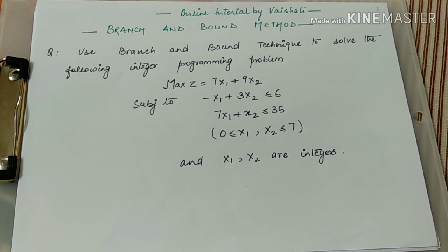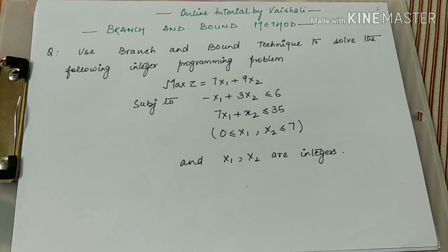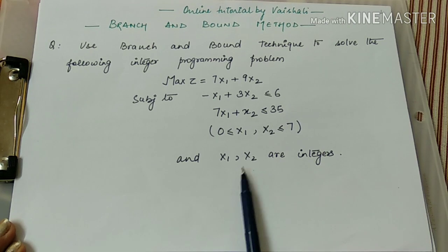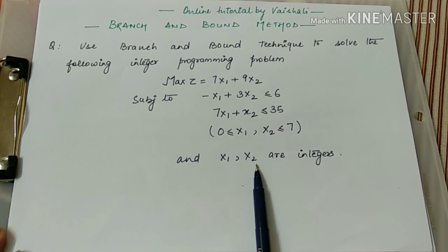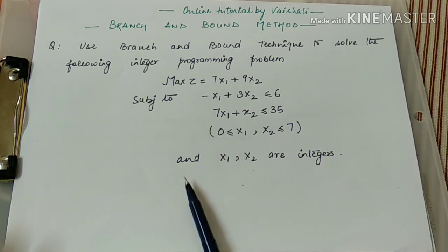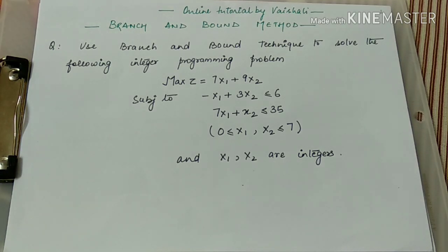The one thing I want to explain you is what is branch and bound method. First thing is branching — you have seen a tree, they have branches. Branches means division: when you divide a big thing into small small things, that is called as branching or division. Modularity, branching — all are the similar terms.